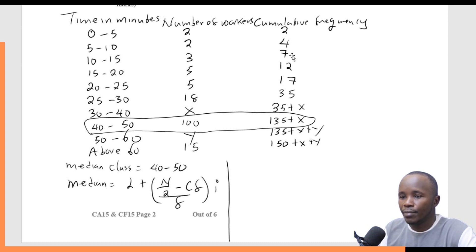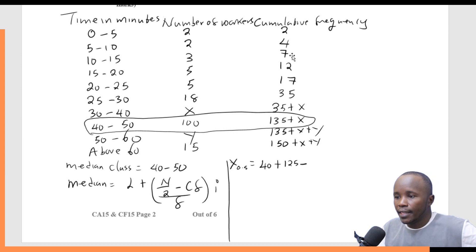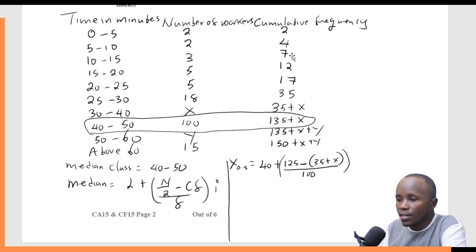So our equation for 40.5: the lower class limit of the median class is 40, plus N over 2 — what is 250 divided by 2? This gives me 125. Subtract the cumulative frequency before the median class, which is 35 plus X. That is the cumulative frequency just before the median class. Then divided by F, the frequency of the median class, which is 100, multiplied by the class width of the median class. From 40 to 50, that is 10.